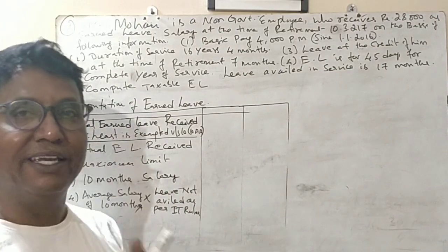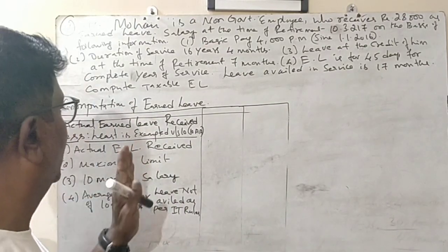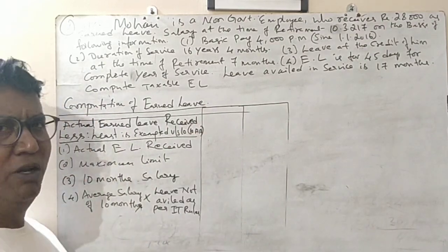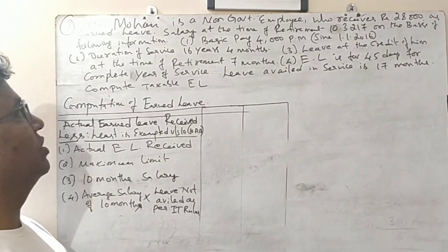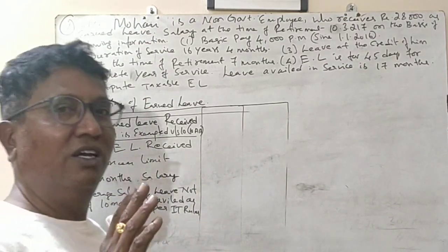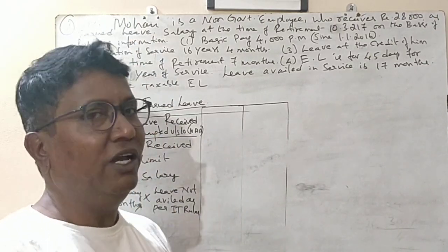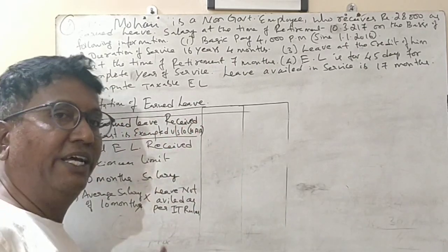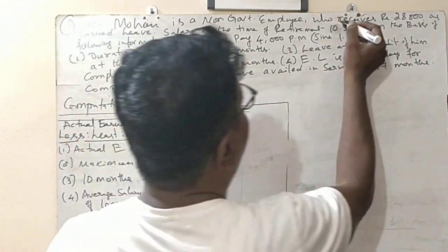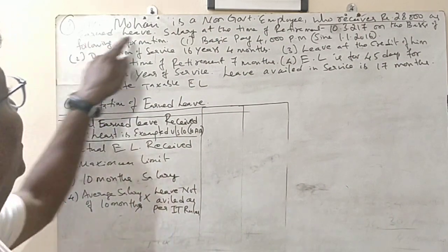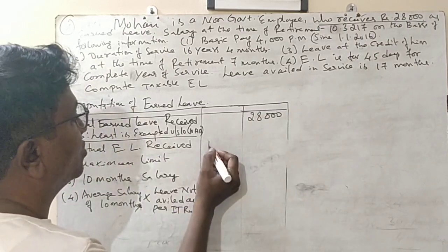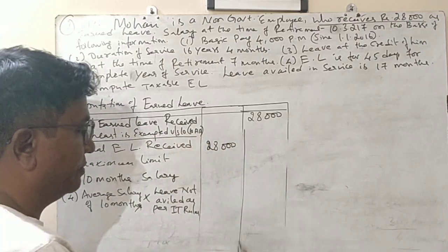Now we will see the second question, because from one problem you don't understand much. So I have taken a second question as well. Mr. Mohan is a non-government employee — he is not a government employee, so we have to apply these rules and compute the taxable portion of earned leave. He receives 28,000 rupees of earned leave amount at retirement.